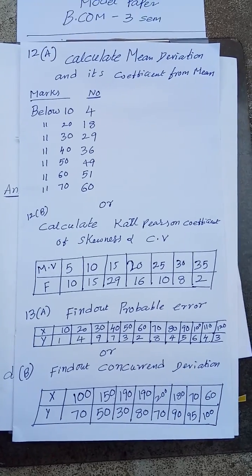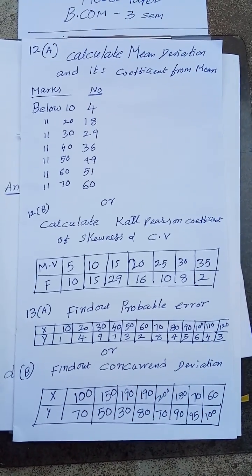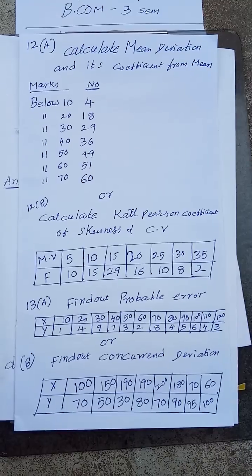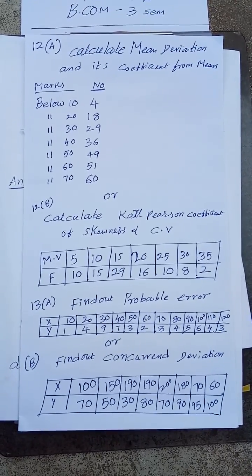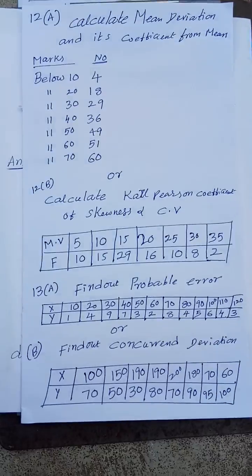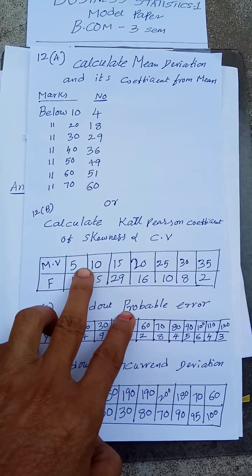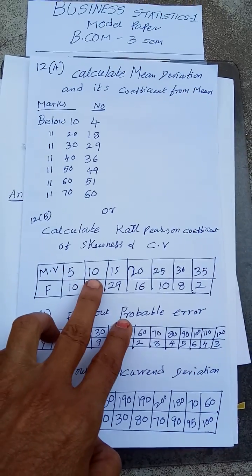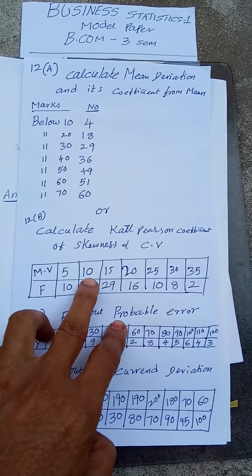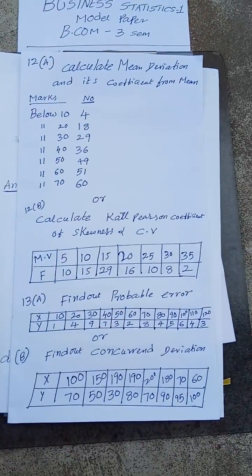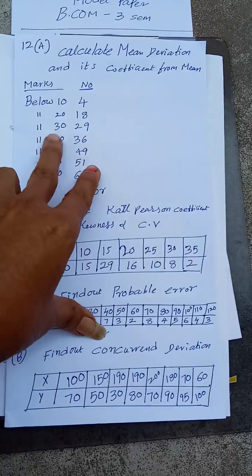In one problem, mid-values are given and you have to convert mid-values into class intervals. See — the difference between 5 and 10 is 5; divide by 2 to get 2.5, giving intervals 2.5 to 7.5, 7.5 to 12.5. Likewise, you have to do the same. Try to do it on your own, my dear students.